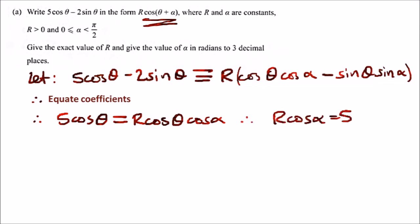Likewise, we repeat the same process for sine. Because they both have negative, we can ignore that and say 2 sine theta on the left hand side equals r sine theta times r sine alpha on the right hand side. Once again, eliminating the sine theta should leave us with r sin alpha equals 2.